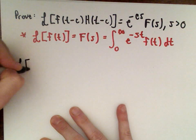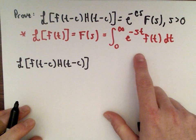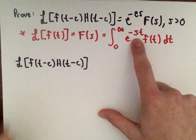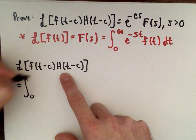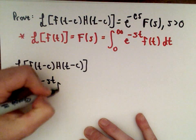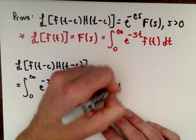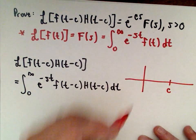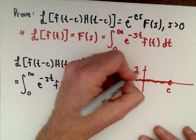So the Laplace transform of f(t − c) multiplied by h(t − c) — using the definition, we take whatever function is inside the brackets and multiply it by e to the negative s·t. This gives us the integral from zero to infinity of e to the negative s·t, multiplied by f(t − c) times h(t − c), dt.